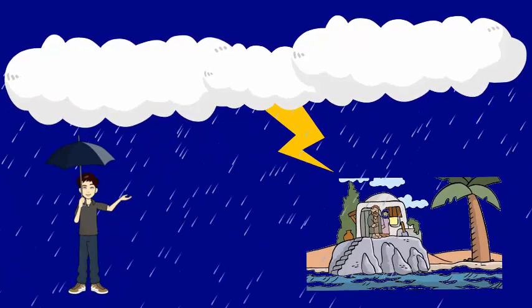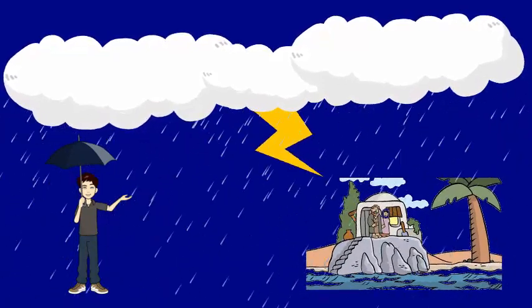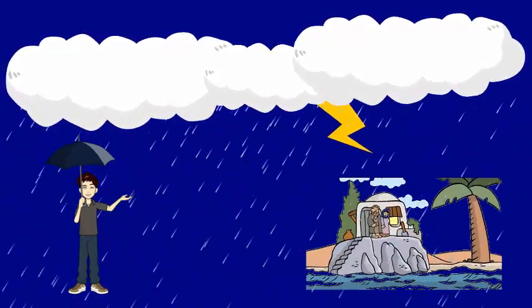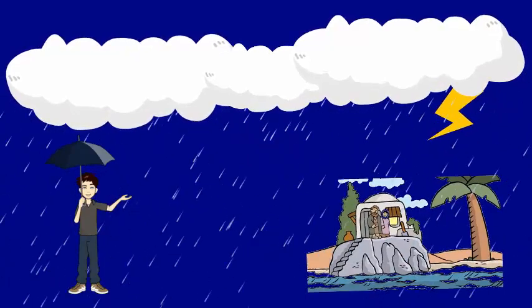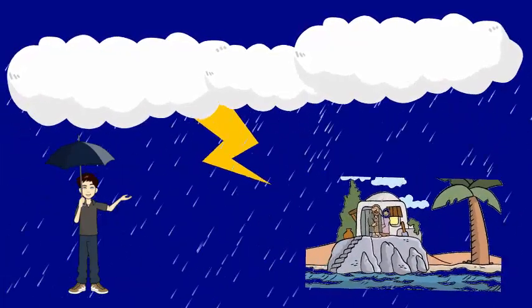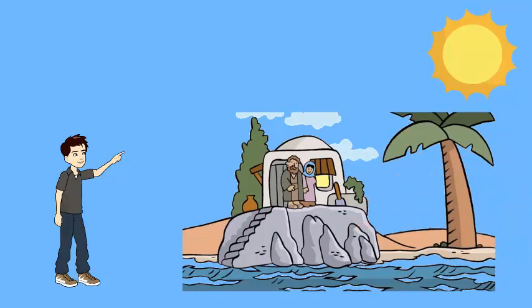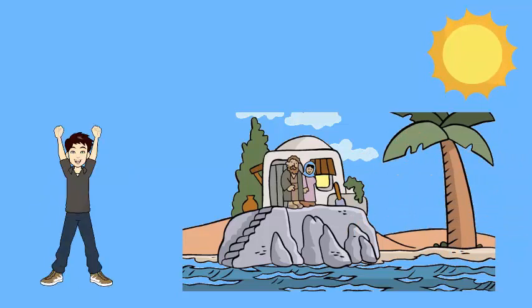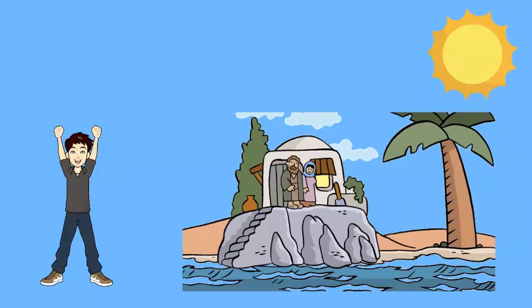Then there was a big storm with a lot of wind and rain. The stream next to his house rose high and came near to the house. But because he built his house on rocky ground, it did not wash away.